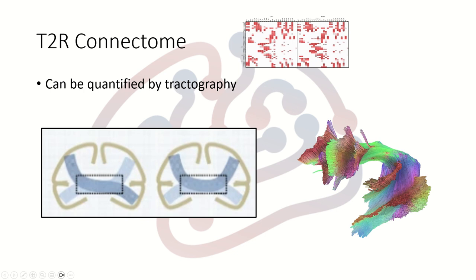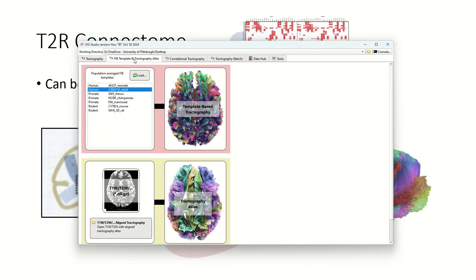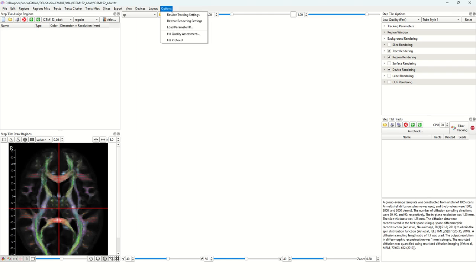So how to do this in DSS Studio? We'll use an example here. Let's start DSS Studio. It's starting the program. For illustration, we'll use the tractography template. We switch to the second tab and then open the human adult atlas.